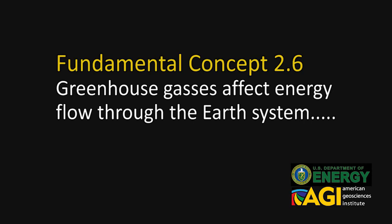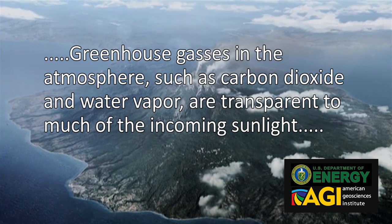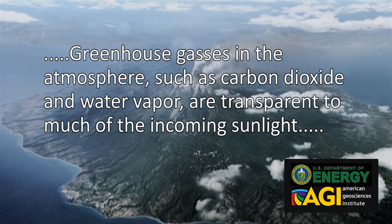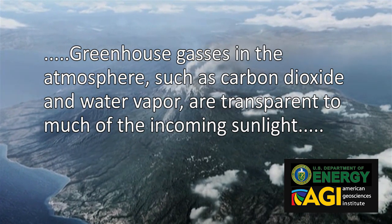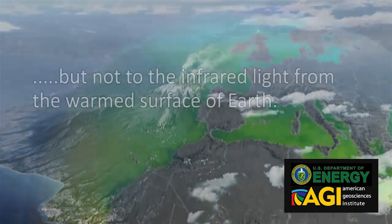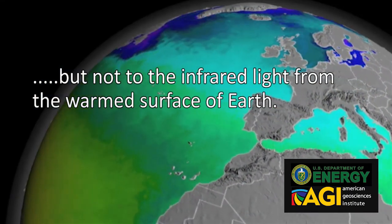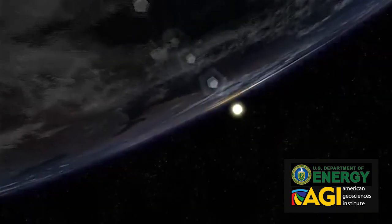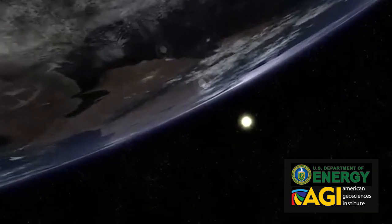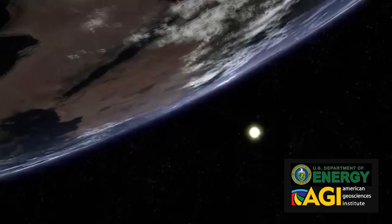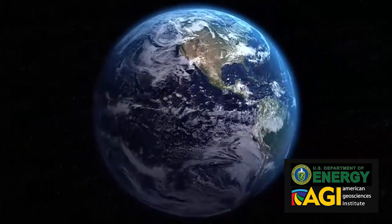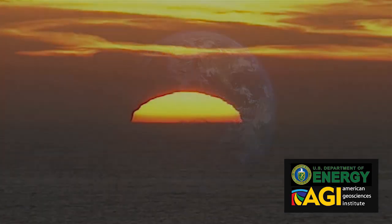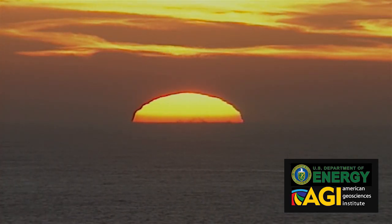Greenhouse gases affect energy flow through the Earth system. Greenhouse gases in the atmosphere, such as carbon dioxide and water vapor, are transparent to much of the incoming sunlight but absorb energy from the warm surface of Earth. These gases play a major role in determining average global surface temperatures. When Earth emits the same amount of energy as it absorbs, its average temperature remains stable.